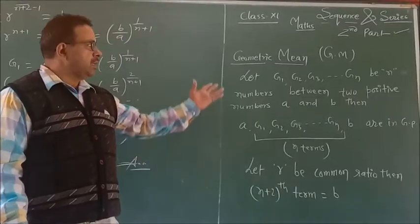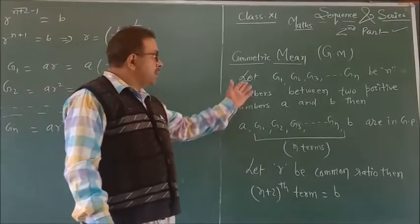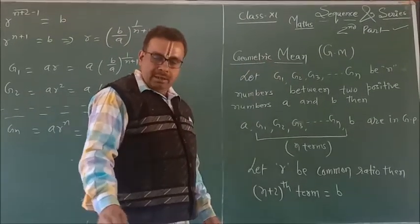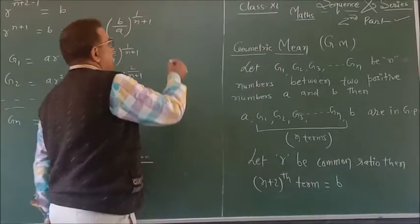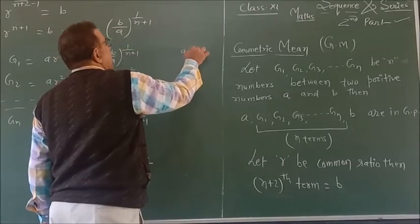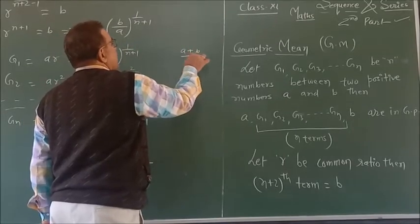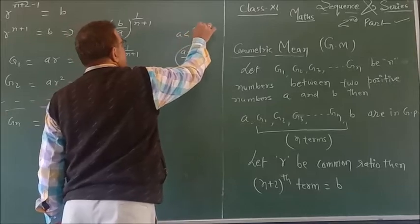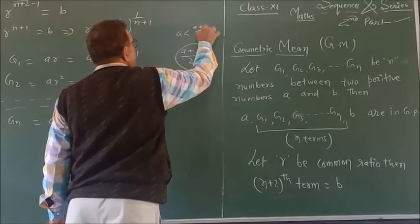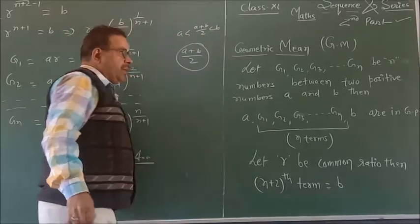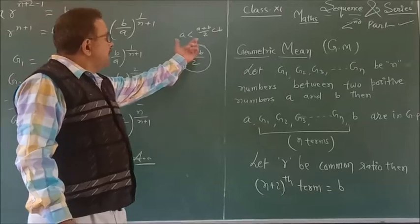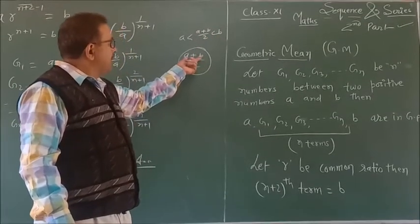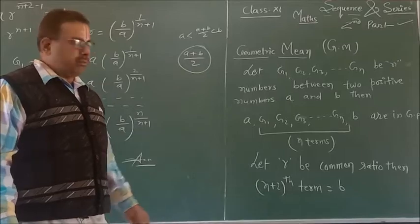Now the next topic: geometric mean. What do we mean by geometric mean? In arithmetic mean, we have already done: a < (a+b)/2 < b. Similarly, geometric mean G is inserted between two numbers a and b.